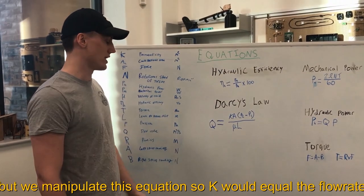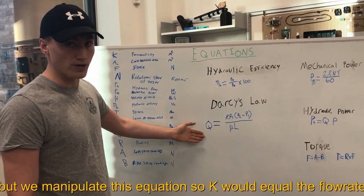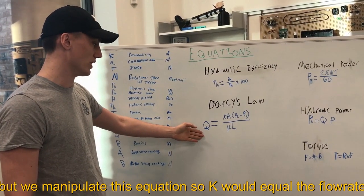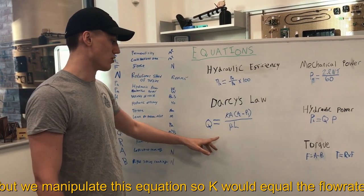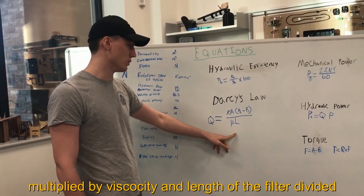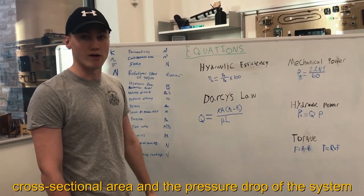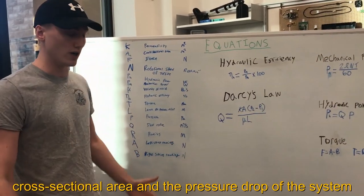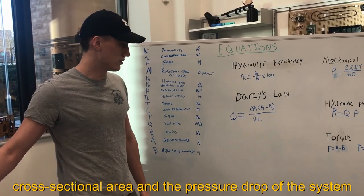And Darcy's law, which we manipulate this equation so that k will equal flow rate multiplied by viscosity and length of the filter divided by the cross-sectional area and the pressure drop of the systems.